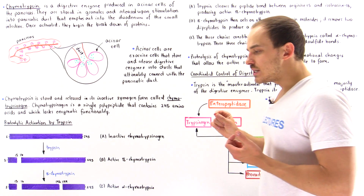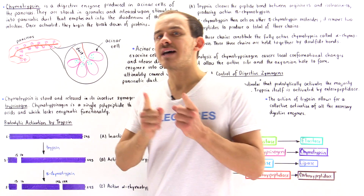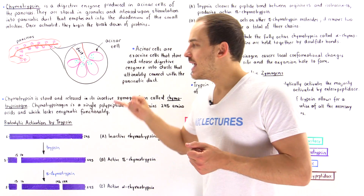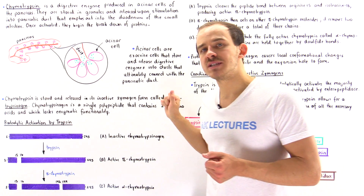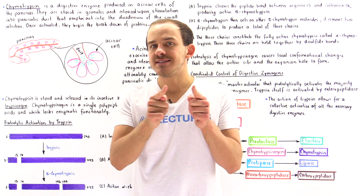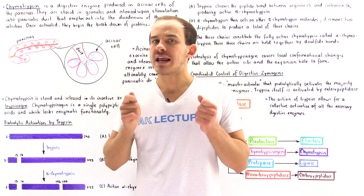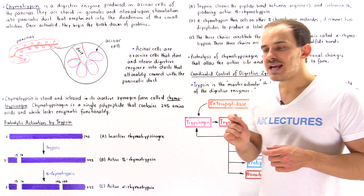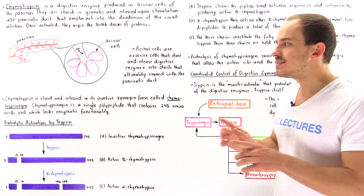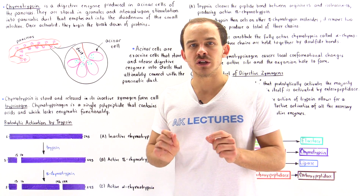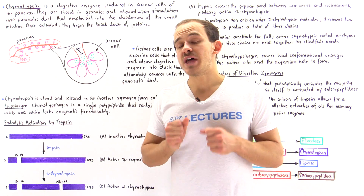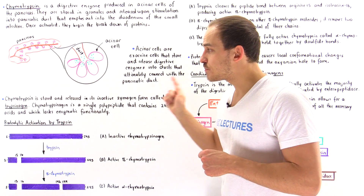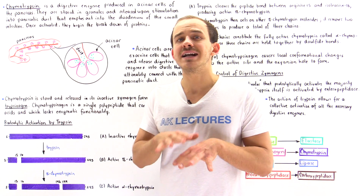Chymotrypsin is initially synthesized in its zymogen form — the inactive form. The zymogen form of chymotrypsin is known as chymotrypsinogen, which is a single polypeptide chain consisting of 245 individual amino acids. Chymotrypsinogen is not functional at all because the active site and the oxyanion hole of this zymogen are not yet formed.